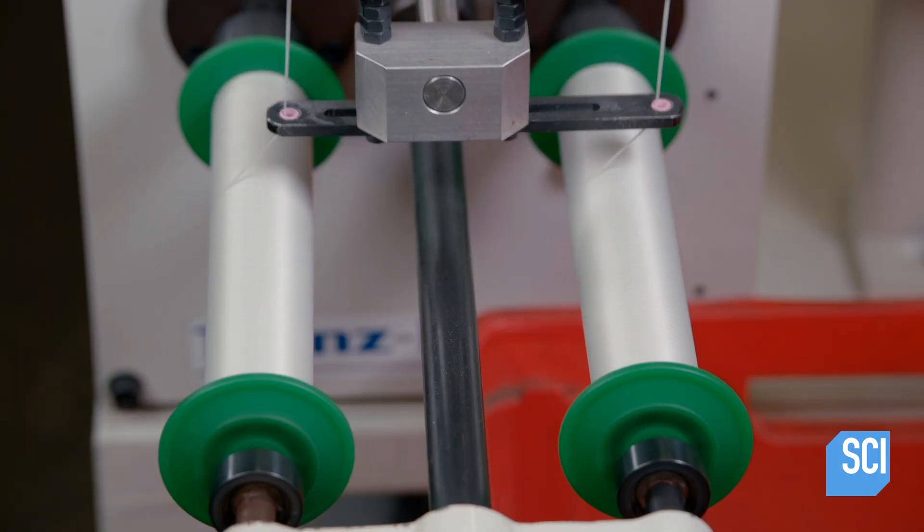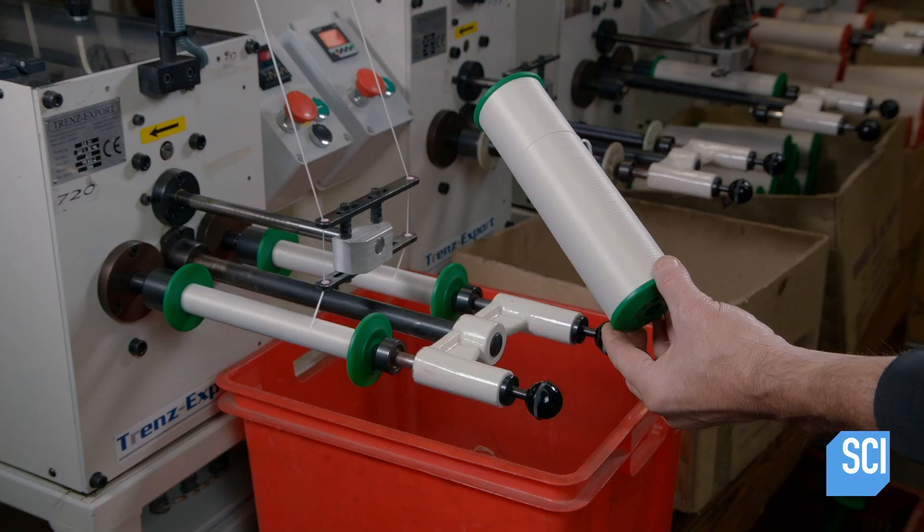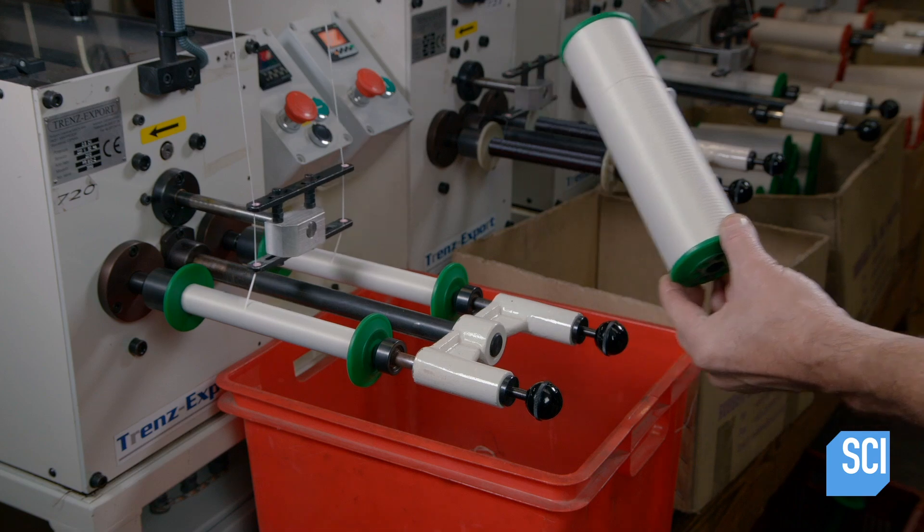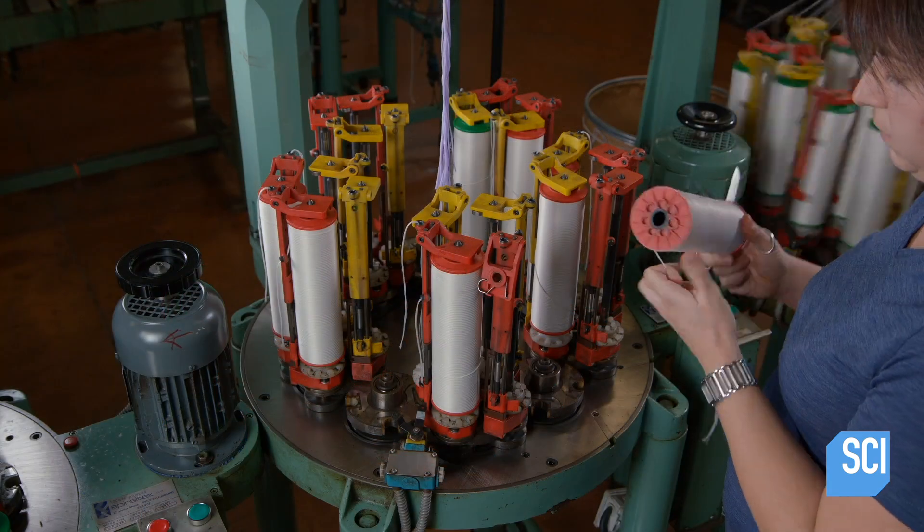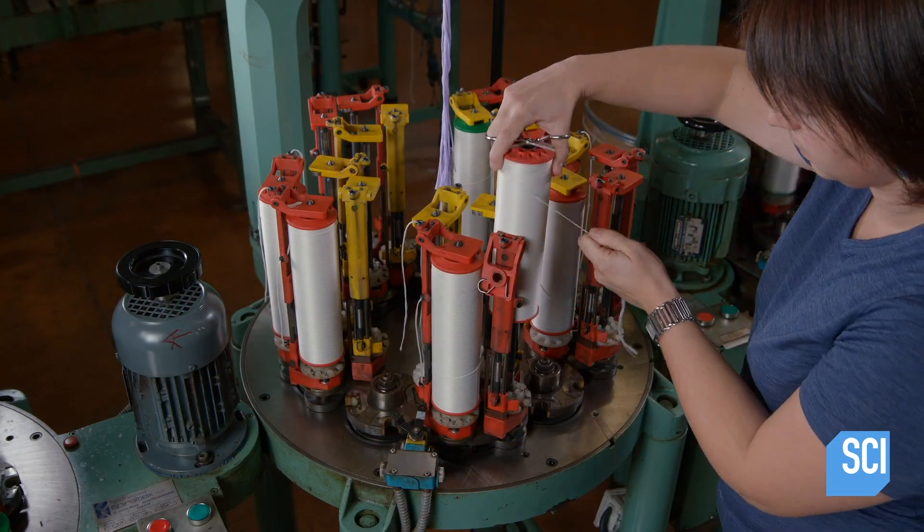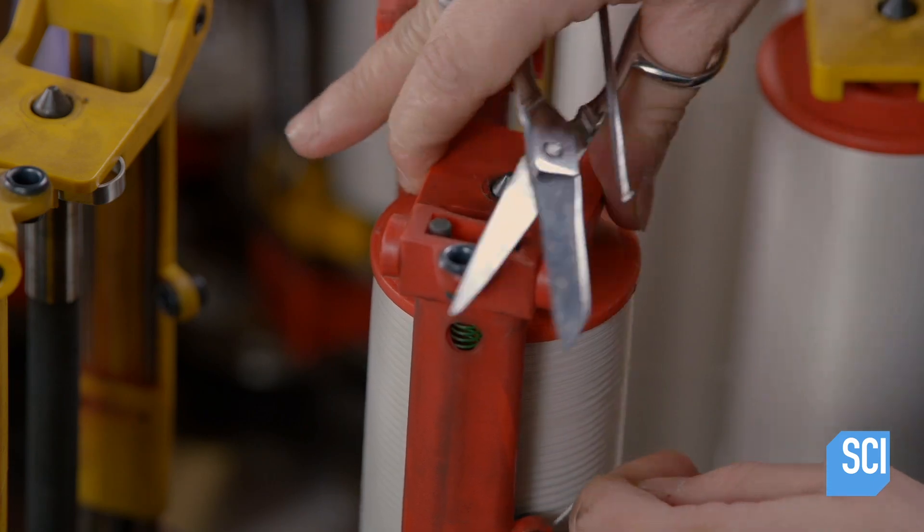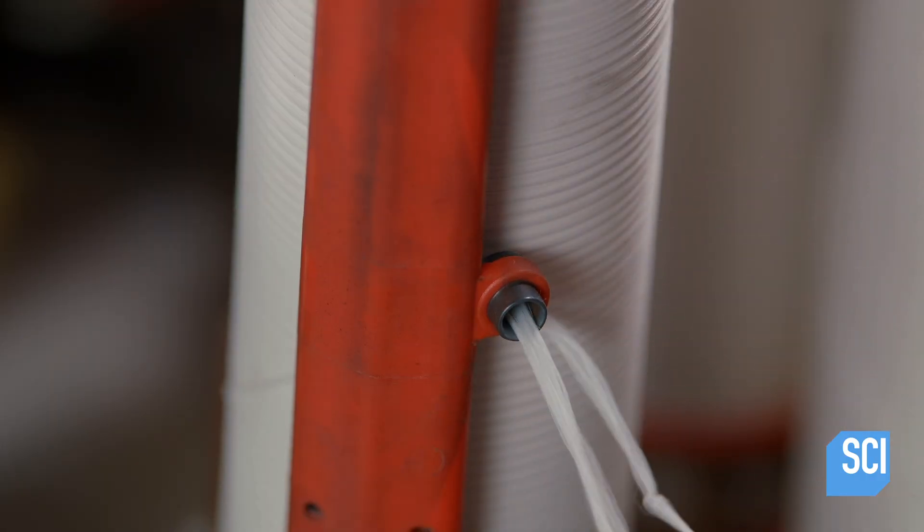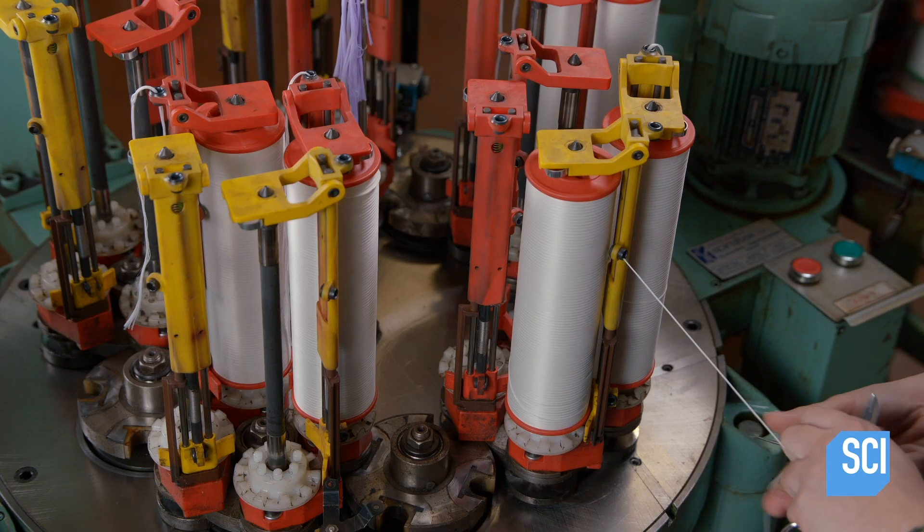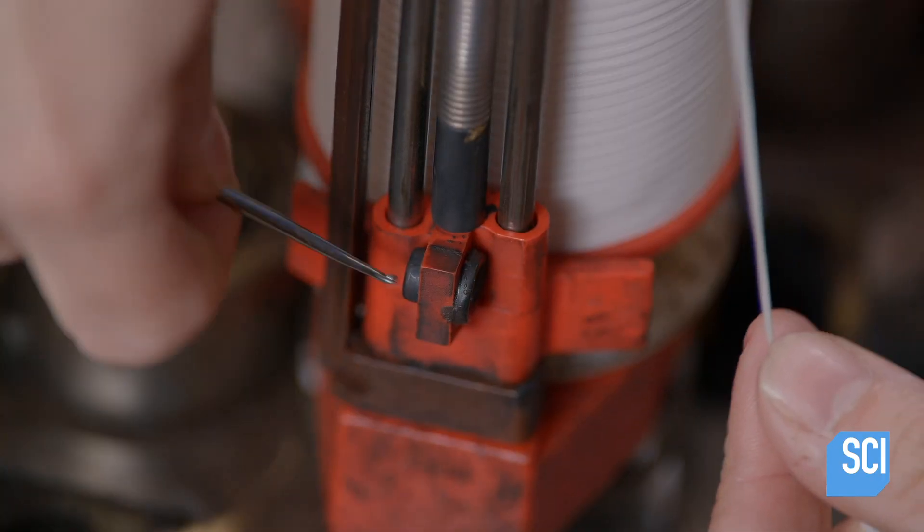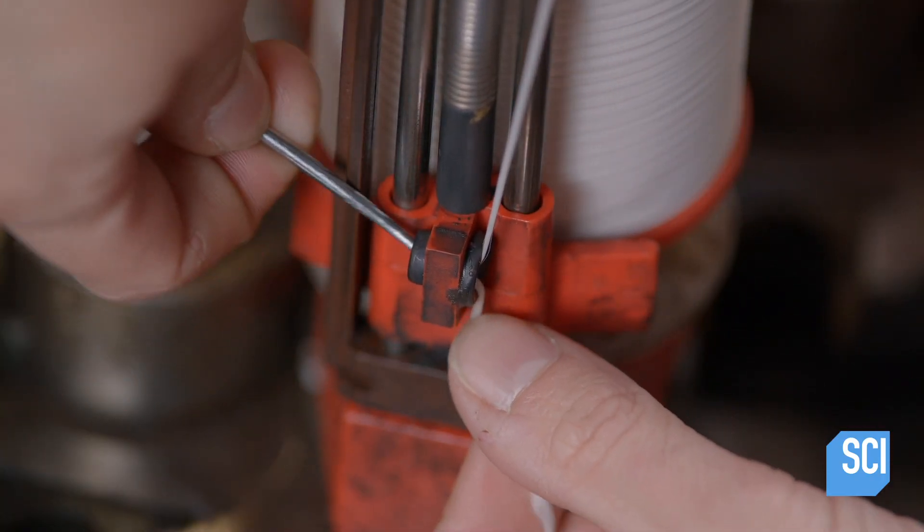For this particular shoelace, the machine is programmed to wind 8,200 feet of thick thread per bobbin. Another worker installs 20 of those bobbins on a braiding machine. For each one, she passes the end of the thread through three eyelets, the second of which regulates the tension of the thread.